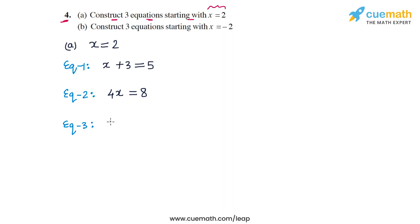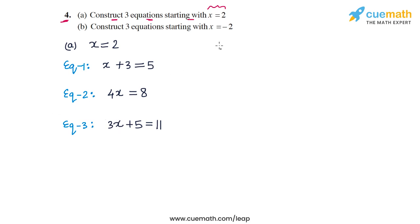Finally, let's make a third, slightly more complicated equation. We have 3x, which is 6, and then let's add 5. So 3x plus 5 equals 11 is a third possible equation in x.